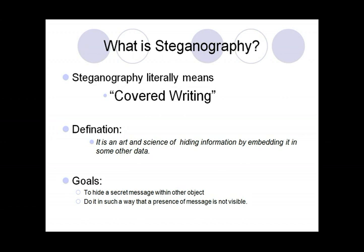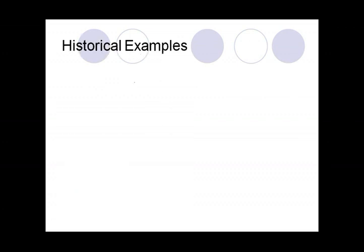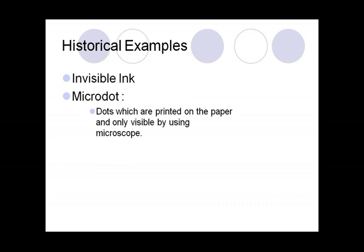Now let us move toward the historical examples of steganography. The first example is invisible ink — ink which is only visible by using some chemical reaction on it. Another one is the micro dot — dots which are printed on paper and only visible by using a microscope.